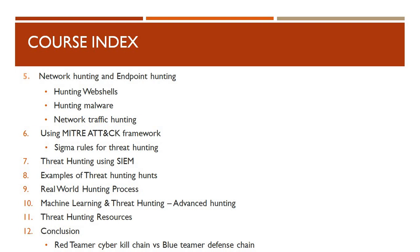We'll look at various threat hunting hunts, a real-world threat hunting process, and how we actually implement and carry on with our threat hunting process — with a real world example. Next will be machine learning and threat hunting. Machine learning is an important aspect in every field right now, and even in cyber security it plays a very important role. Combining machine learning with threat hunting moves us to advanced hunting. We'll also cover threat hunting resources and conclude by comparing a red team or cyber kill chain with a blue team or defense chain.